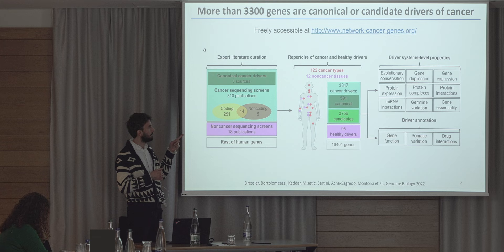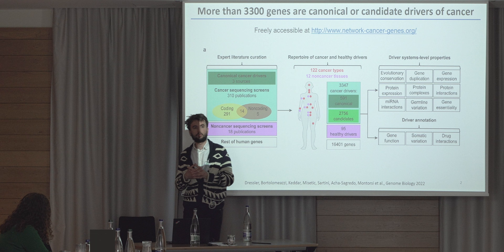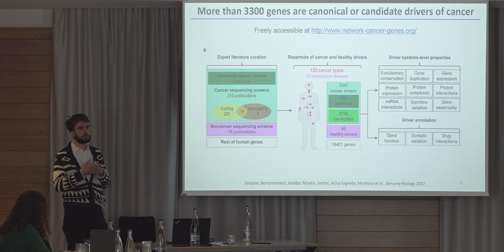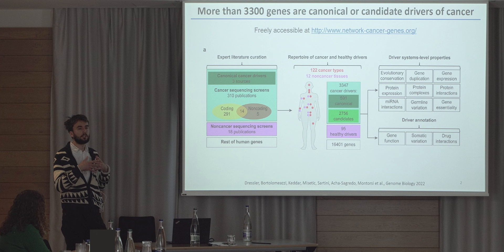Then we have a little bit less than 3,000 genes that we call candidate cancer driver genes, identified in various high-throughput cancer sequencing screens using different statistical approaches based on positive selection. For these genes, there is still no experimental support that they're really involved in cancer — so far they're still predictions, and we define these driver genes to be candidates.